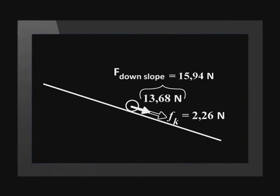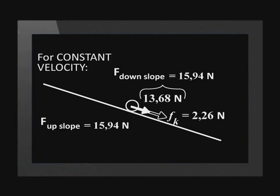So how hard must a person pull up the slope to balance these two forces which act down the slope? The sum of these two forces is 15.94 newtons. So that's how hard the person has to pull up the slope for the forces along the slope to be balanced. The sled will then move at constant velocity.